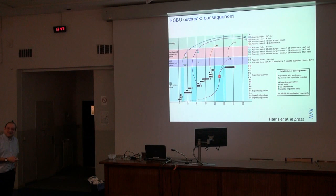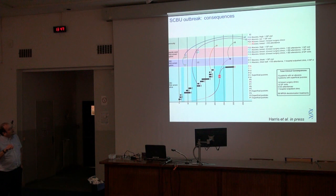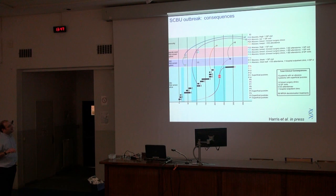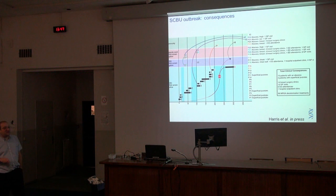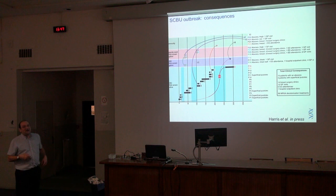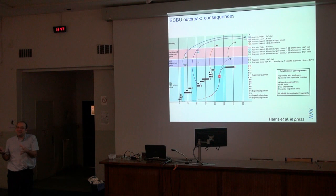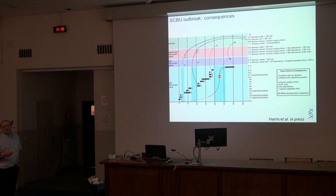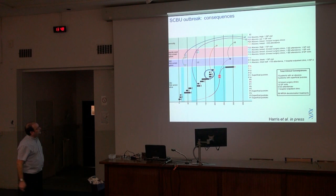It wasn't a simple MRSA carriage outbreak. All the babies tested positive on routine swabbing, but the community patients had come to hospital with abscesses — breast abscesses, leg abscesses, ear abscesses — with MRSA taken from those. Several babies had been discharged with superficial pustules. It turns out this strain carries an extra toxin — Panton-Valentine leukocidin — associated with skin and soft tissue infection and community-acquired Staph aureus. This was a highly virulent Staph aureus associated with methicillin resistance, not simple MRSA carriage.